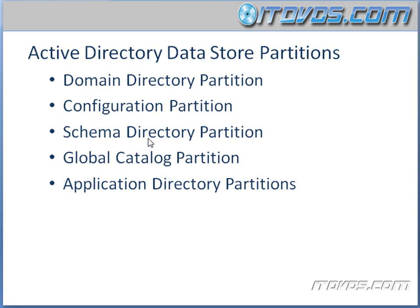The schema partition is also replicated to every domain controller in the forest, and it's the same. But there is a difference between this partition and the configuration partition in that only one domain controller has a writable copy of the schema directory partition, and that's the schema master. That's why when we go to do things like extend the schema — let's say with Microsoft Exchange — we have to do it while we're on or connected to the schema master, so that we can alter the schema, which in effect alters the schema directory partition.